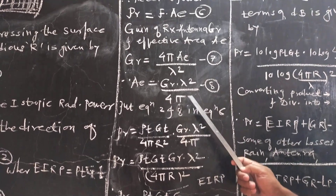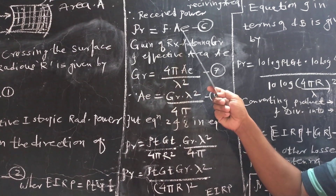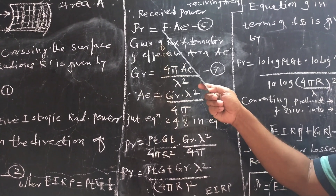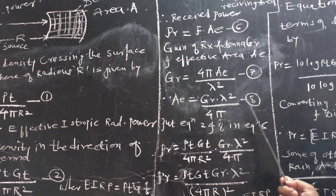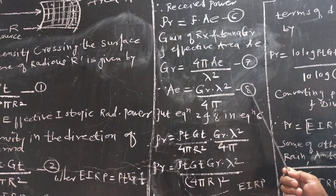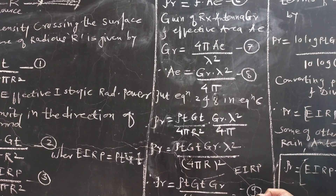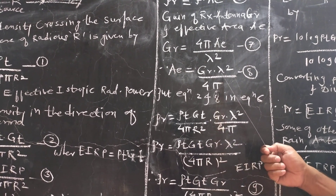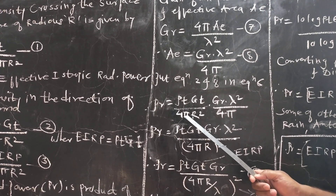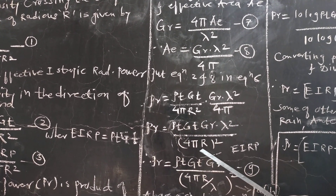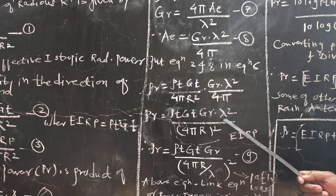Putting these equations together — equation 6 requires us to fill in the values of EF and AE. We put the value of EF from equation number 2 and AE from equation 8 into equation number 6. This gives: PR = [PT·GT / (4πR²)] × [GR·λ² / (4π)]. In the denominator, 4π × 4π × R² can be written as (4πR/λ)², and the numerator contains the product PT·GT·GR·λ², as shown in this figure.